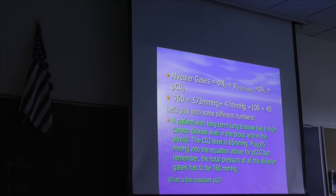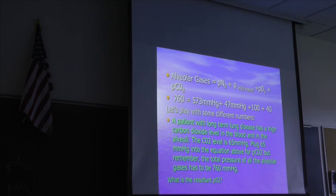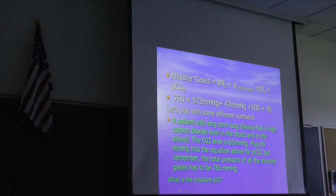Let's play with some different numbers. A patient with long-term lung disease has a high carbon dioxide level — 65 mmHg. Plug 65 into the equation for carbon dioxide. But remember, the total pressure of all alveolar gases still has to be 760 mmHg. So if you're changing carbon dioxide from 40 to 65, all numbers still have to add up to 760.